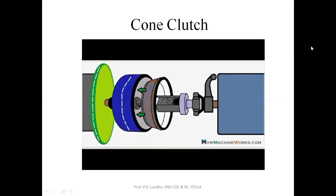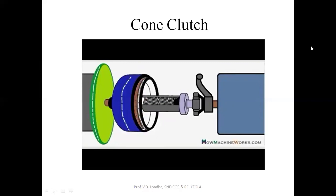Now I am activating the clutch lever control so that the drive can be transmitted. The male cone gets in contact with the female cone, and the drive from the flywheel reaching the female cone is carried by the male cone into the input shaft and finally toward the transmission — that is how the transmission gets the drive.